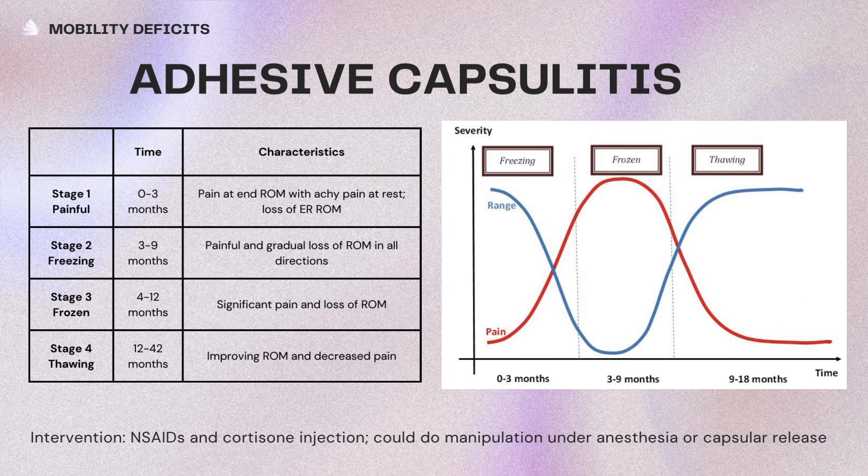Intervention is typically through NSAIDs and cortisone injections. If it does not improve, they could benefit from manipulation under anesthesia or a capsular release.